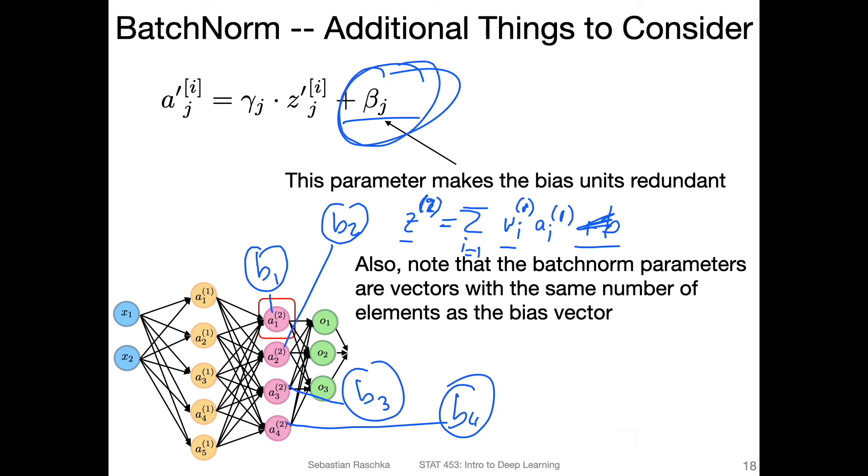The beta would essentially take the role of that bias if we compute batch norm. So in that sense you can skip the bias when you define the layers. I will show you that in the code example. It doesn't really matter, it should work both ways in practice, but it's a little bit cleaner to not use a bias because it's redundant.